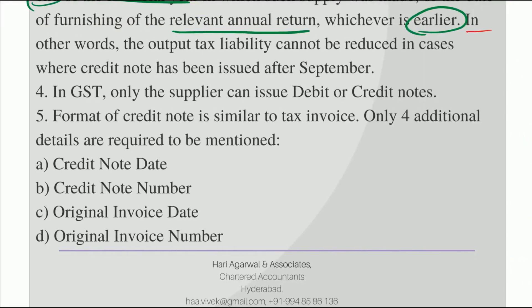So in other words, the output tax liability cannot be reduced. Why? Because when you are issuing a credit note to your customer, it means your liability is getting reduced. So your output tax liability cannot be reduced in cases where a credit note has been issued after September, assuming that you have filed the annual return after the month of September 2018.